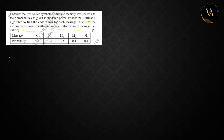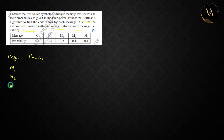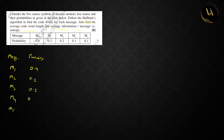First, arrange the given probabilities in descending order. Messages M1, M2, M3, M4, M5 have probabilities 0.4, 0.2, 0.2, 0.1, 0.1. In Huffman coding, we need to arrange in descending order.